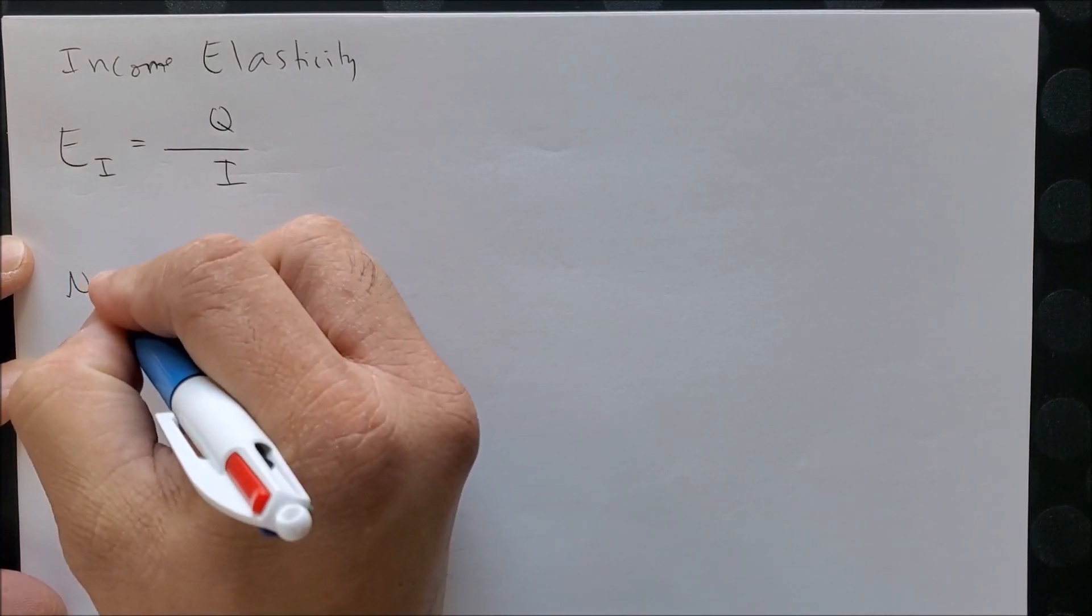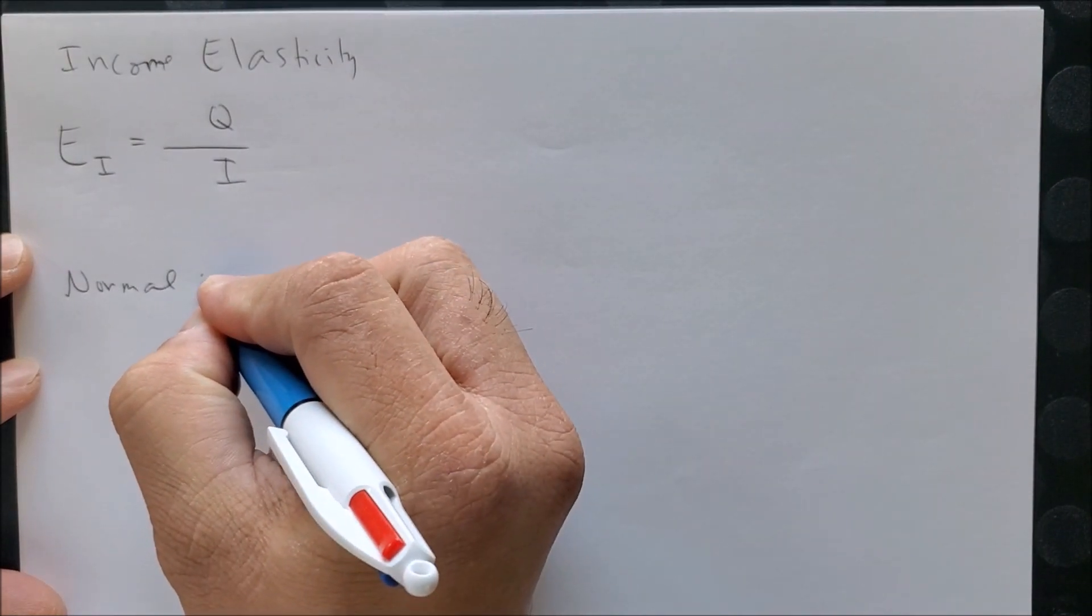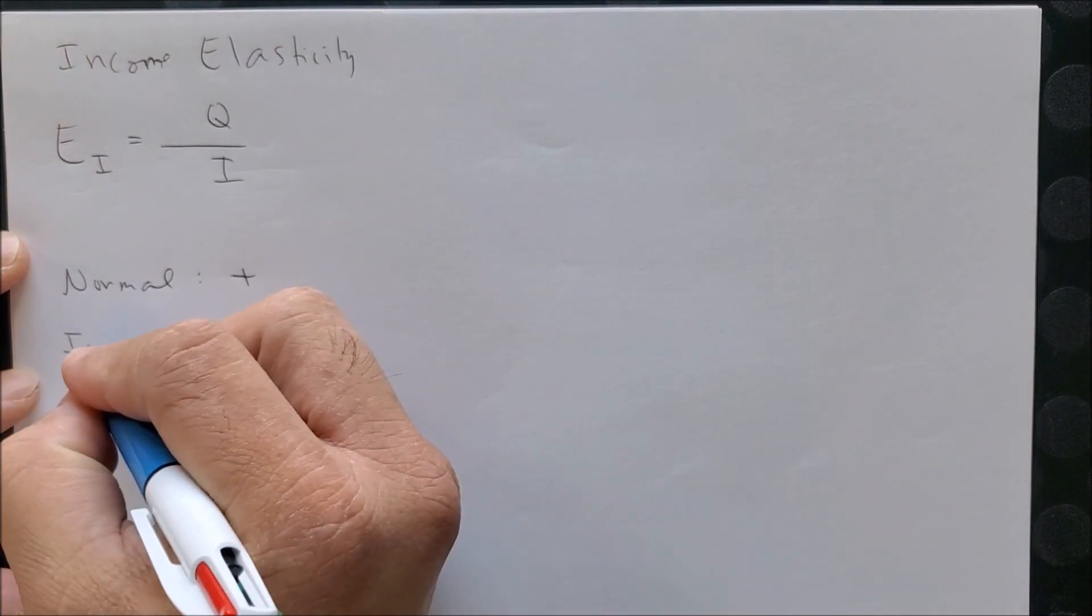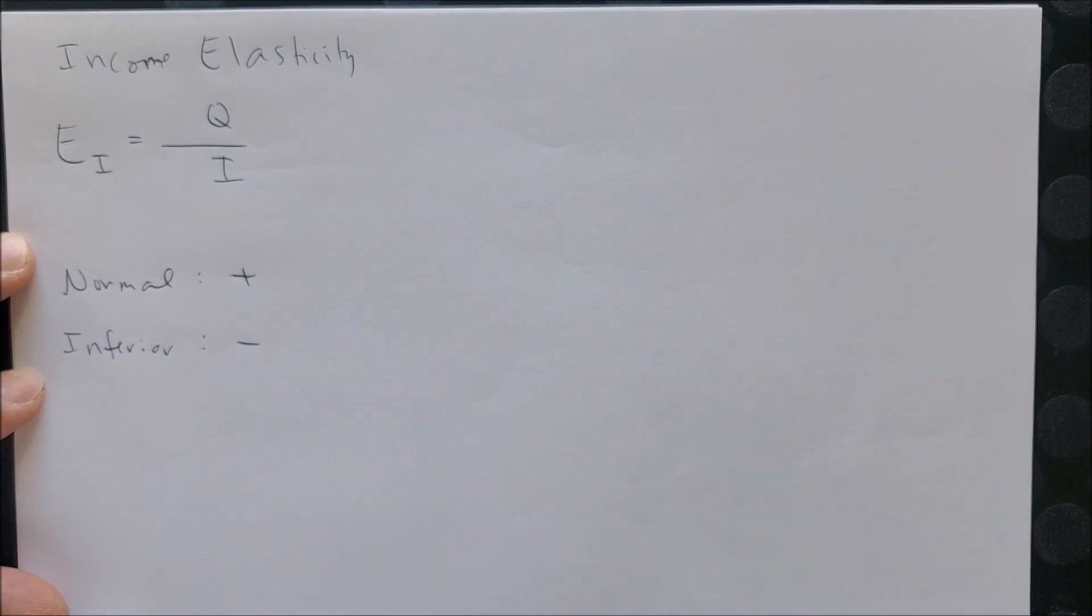So if we have a number that yields a positive sign, we can then say with confidence that the good is normal with respect to your income. And to kind of show why we get a positive for normal and negative for inferior, we have to go back to our equation of big E sub i.